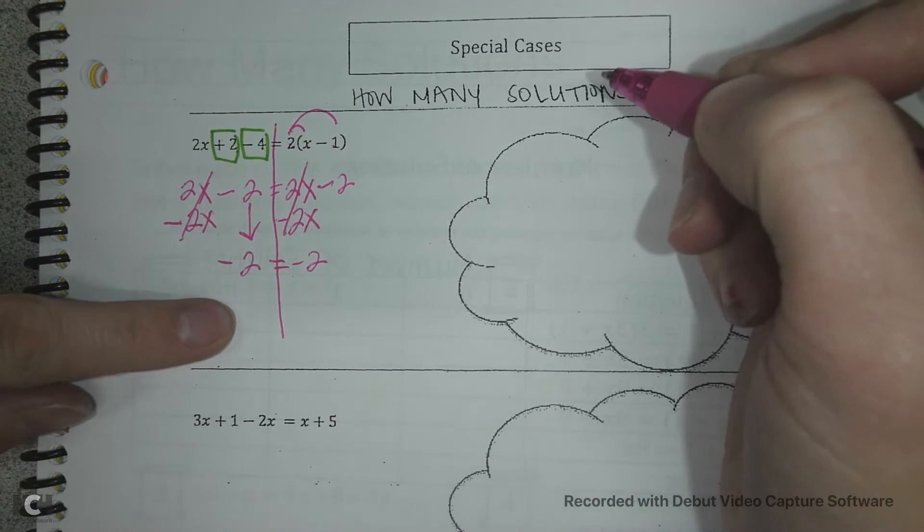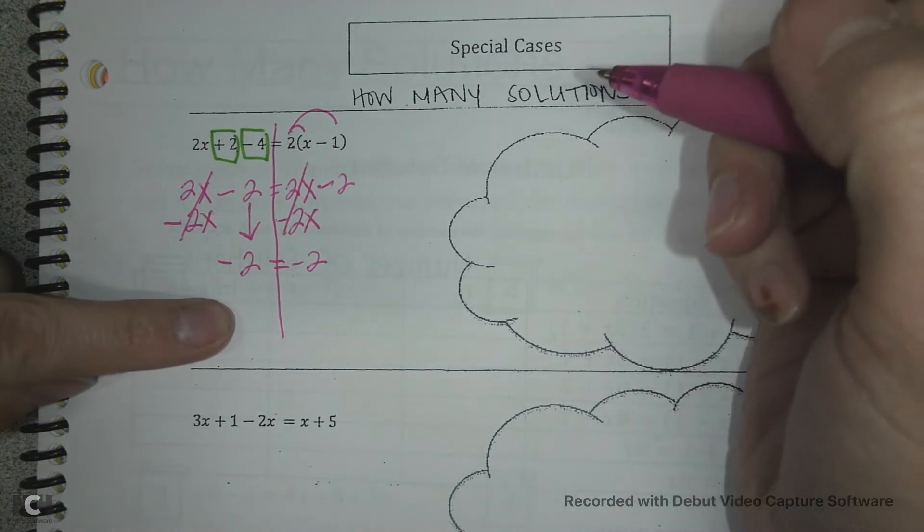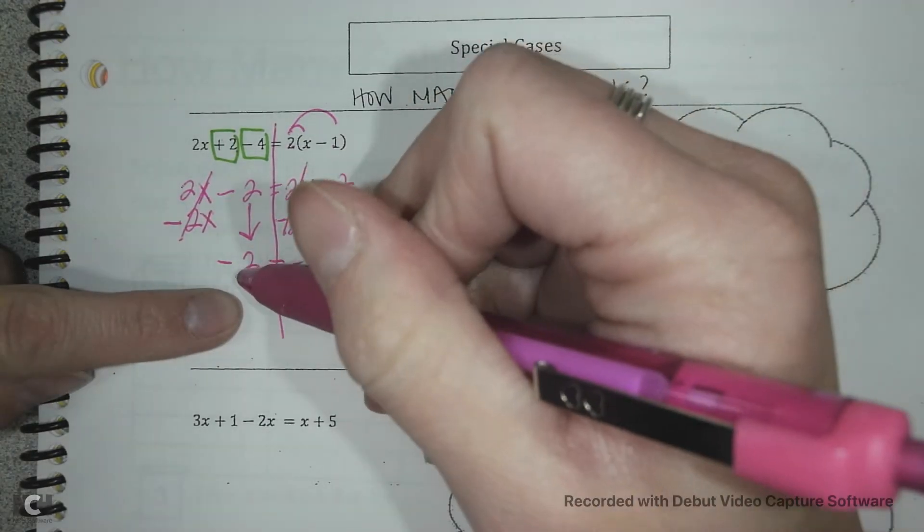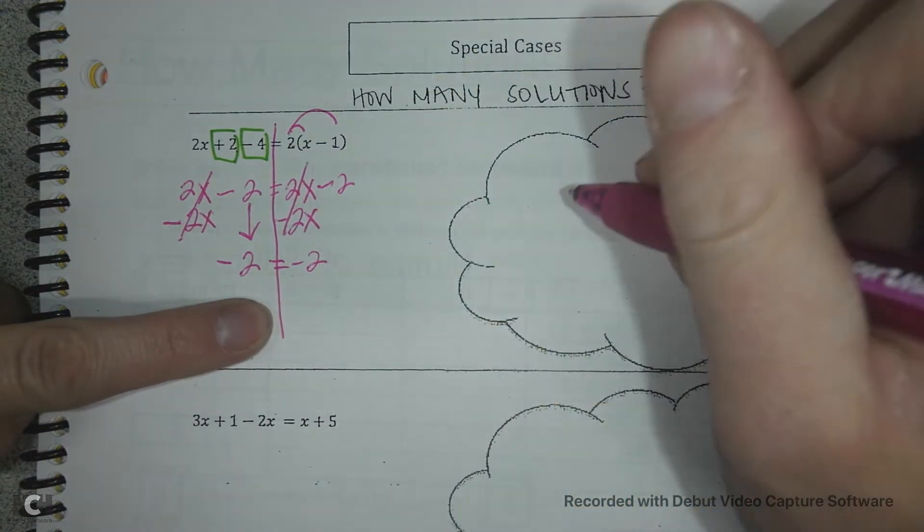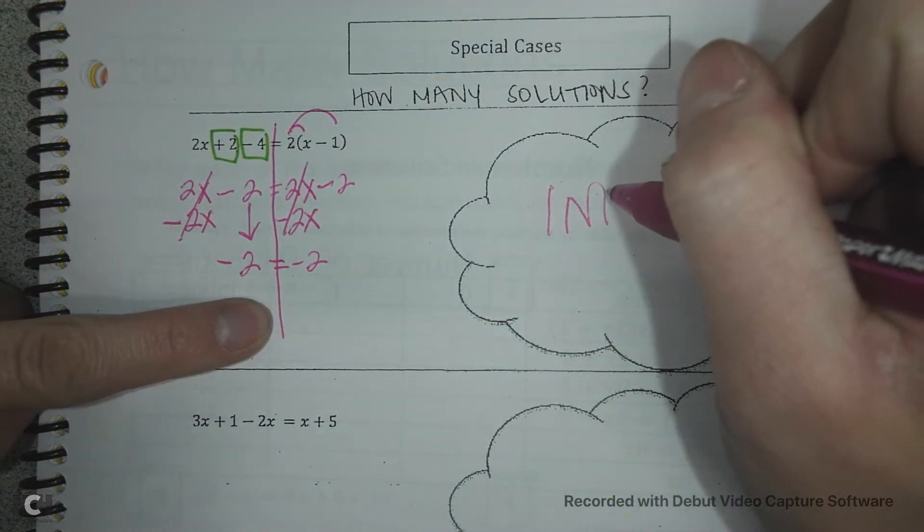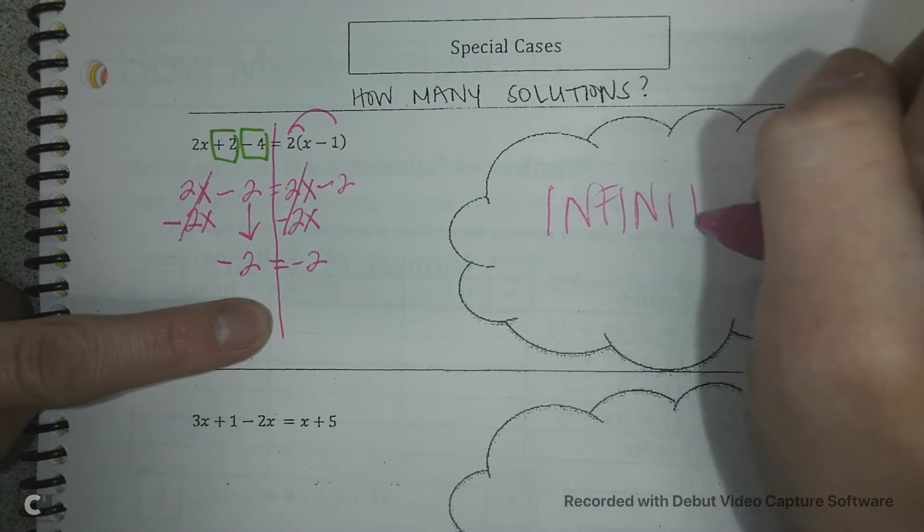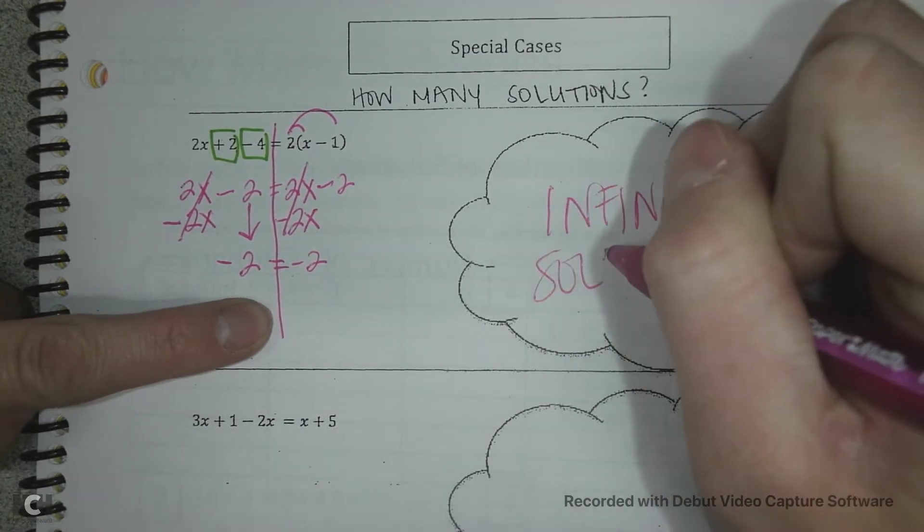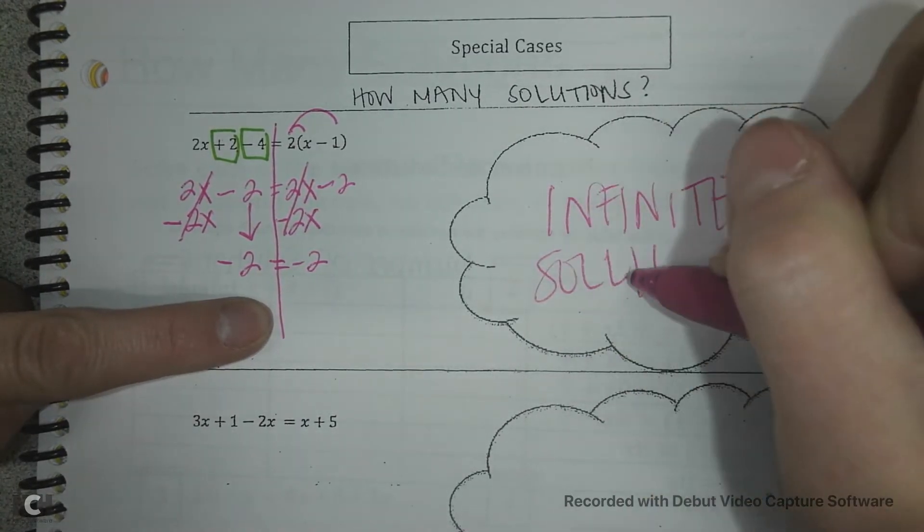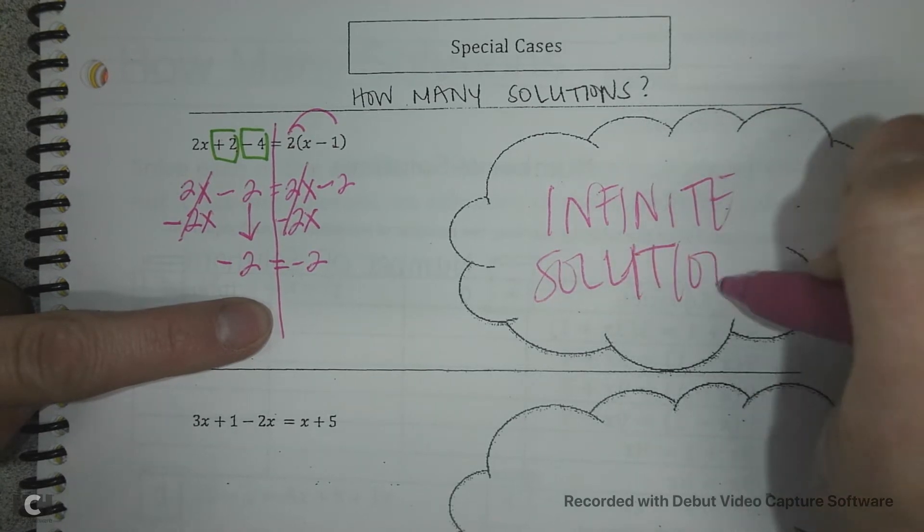I don't have any more letters. So this is definitely not a 1 solution. When the left side 100% equals the right side, this is called an infinite solution.